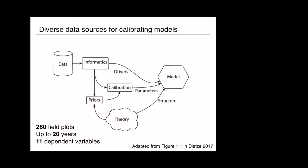You'll see some figures here that I've adapted from Mike's book for the forecasting workflow. Step one is to build up the model being used for forecasting, which involves pulling together the data, collaboration, and prior theories. What's really notable is that nearly 300 build plots go into the calibration, with up to 20 years of data on some plots, and 11 dependent variables in this exercise.